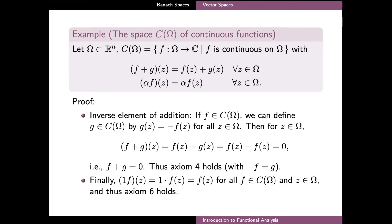Moreover, for any function f we can define another continuous function g which at each point zeta has the value minus f at zeta. If we add these two functions f and g together, we end up with a function which has zero values everywhere, meaning that the sum of f and g is the zero element of the space. This means that axiom 4 holds and the inverse element with respect to the addition of f is given by this function g that we defined. Finally, axiom 6 — the property of multiplication with the scalar 1 — is very easy to prove as well.